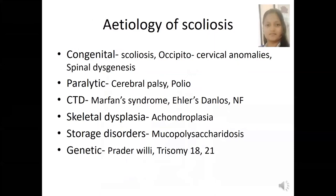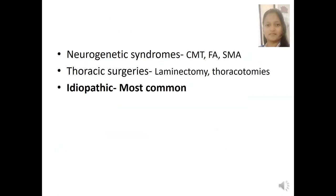When it comes to etiologies of scoliosis, there are a number of neurological, genetic, and skeletal pathologies which can give rise to secondary scoliosis. The causes can be congenital scoliosis, occipital cervical anomalies, paralytic causes like cerebral palsy and polio, and connective tissue disorders such as Marfan syndrome, Ehlers-Danlos, and neurofibromatosis. Skeletal dysplasia, storage disorders like mucopolysaccharidosis, and genetic causes like cri-du-chat, trisomy 18 and 21. Neurogenetic syndromes, Charcot-Marie-Tooth, Friedreich's ataxia, spinal muscular atrophy, and iatrogenic causes from surgeries such as laminectomy and discectomy. Last but not least, the idiopathic entity — even though I have listed it last, it is the most common type of scoliosis.